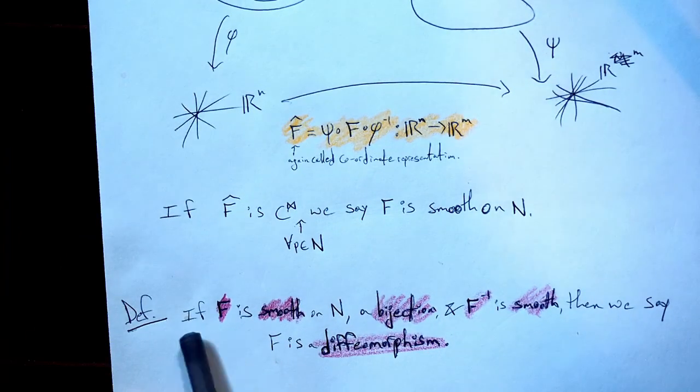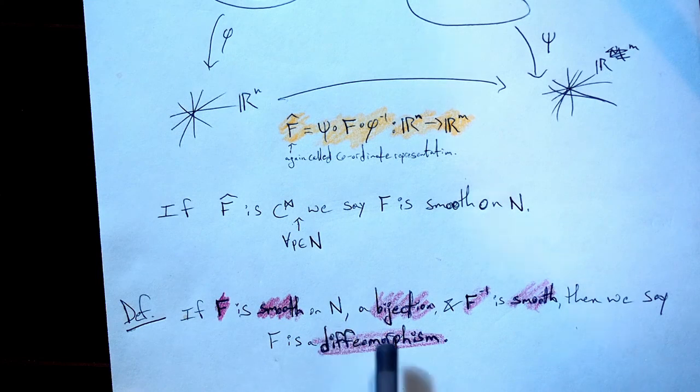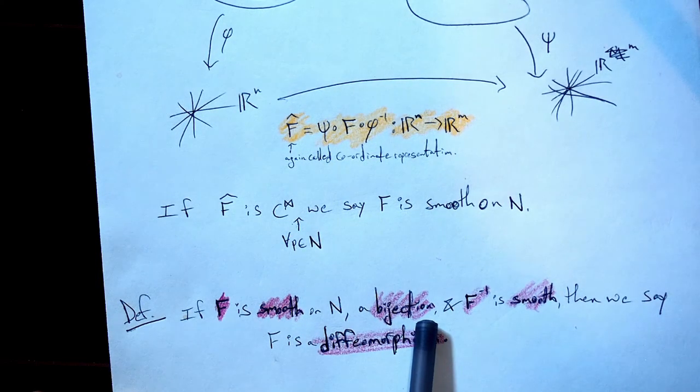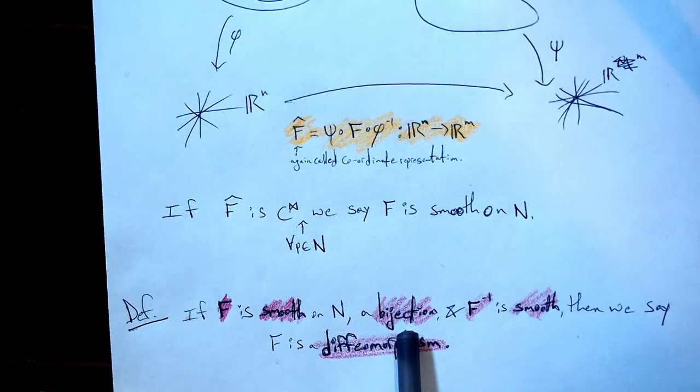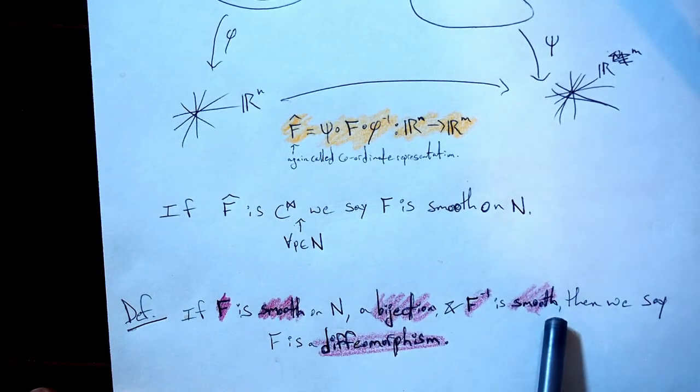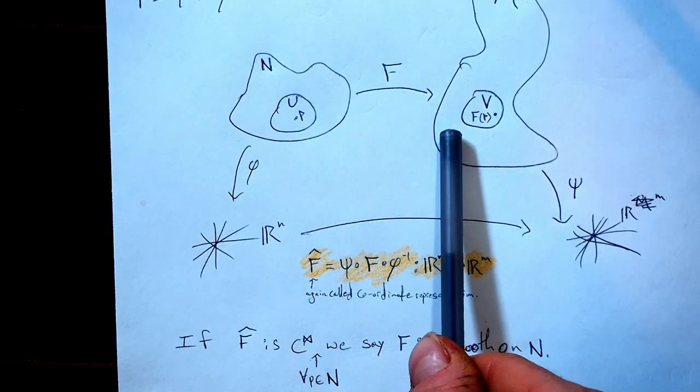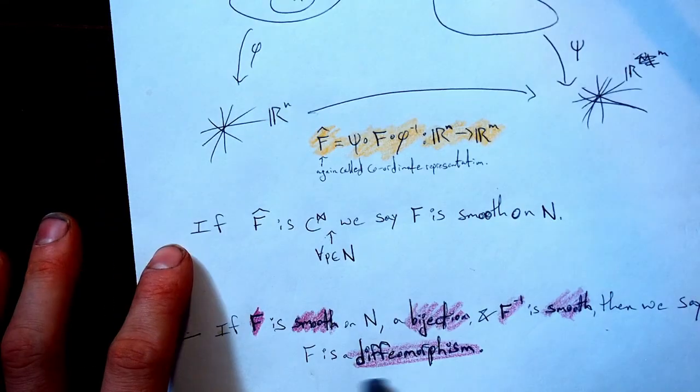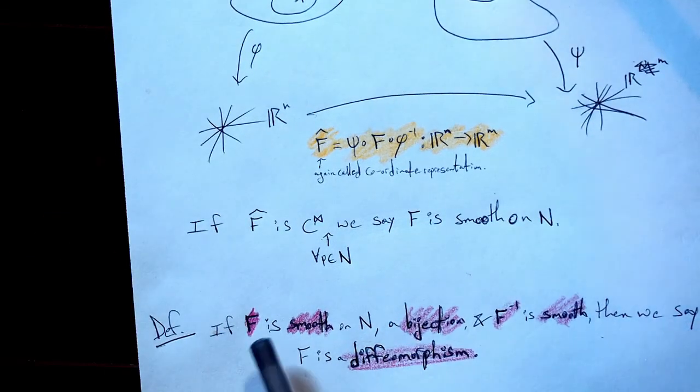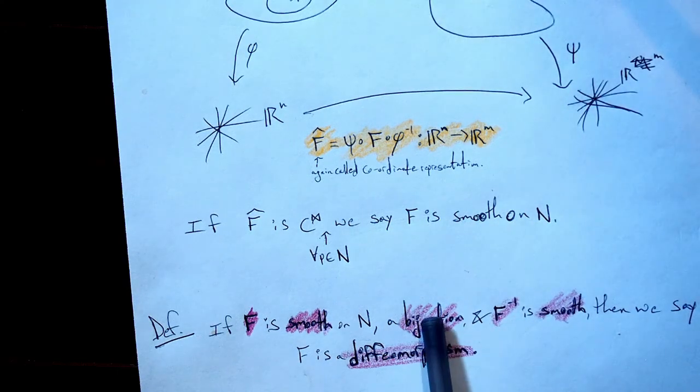So if F is smooth on N, we just defined what that means. Also, it needs to be a bijection, one-to-one and onto, also known as injective and surjective. And F^(-1) is also smooth, so we do all this stuff here backwards, right? F^(-1) would go from M to N. We say that F is a diffeomorphism. So once again, F needs to be smooth, its inverse needs to be smooth, and it needs to be a bijection.